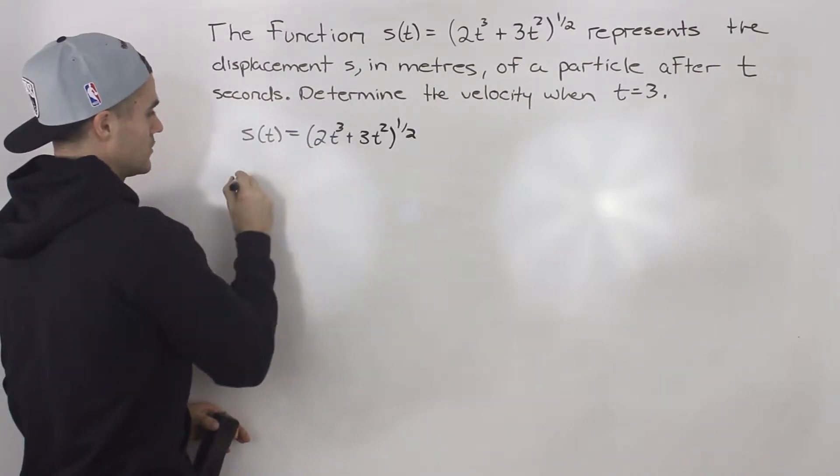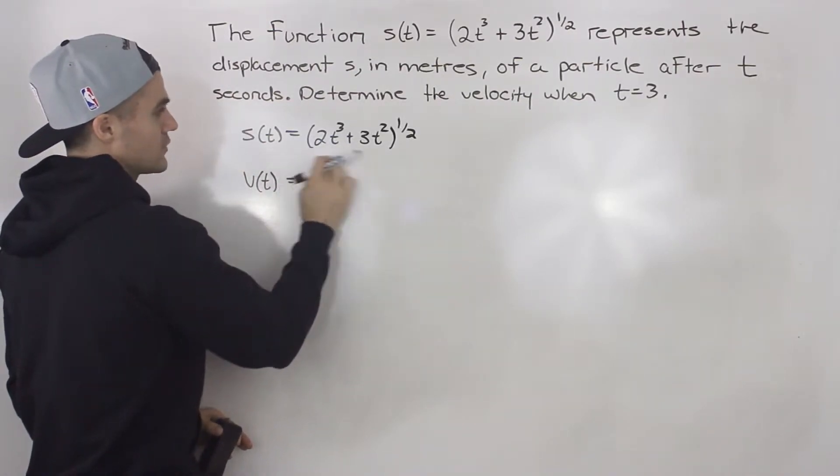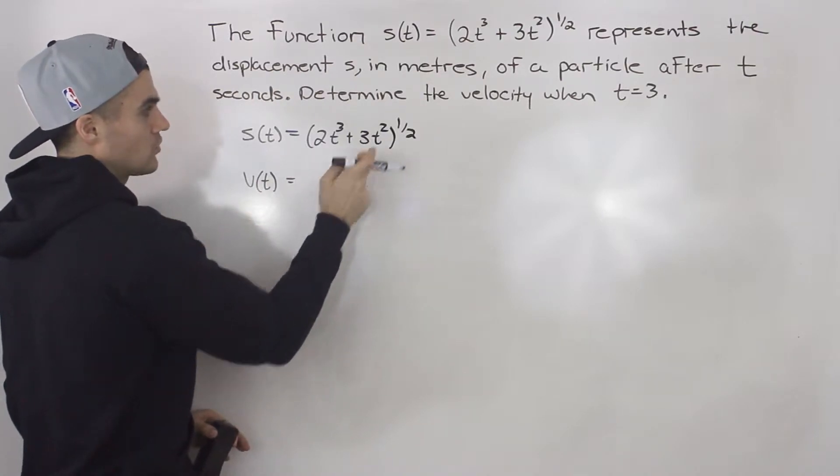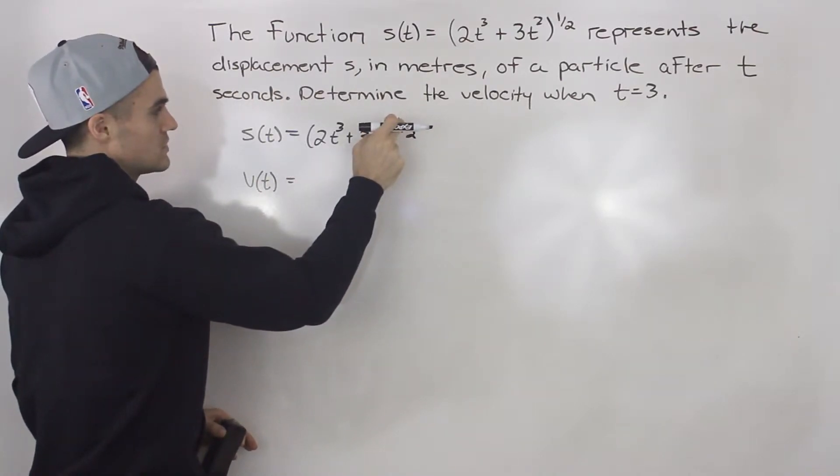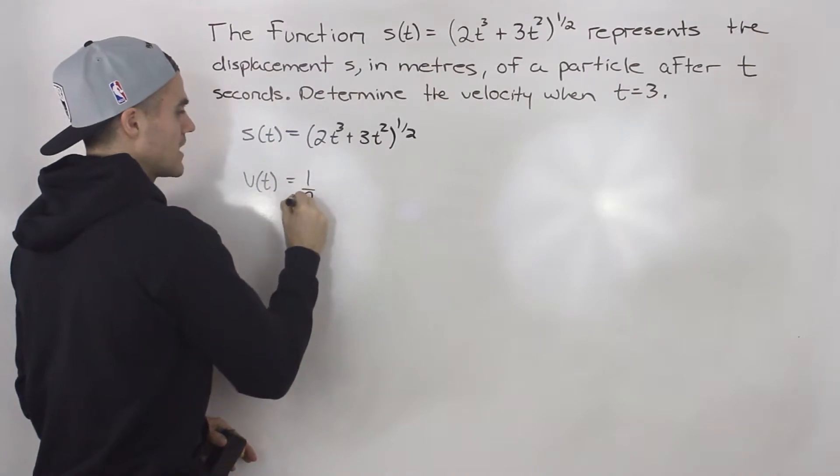So to find the derivative of this function, notice we're going to have to apply the chain rule. So we would take the derivative of the outer function first, so bring the one half down, function inside the bracket stays the same, and then subtract 1 from the exponent.